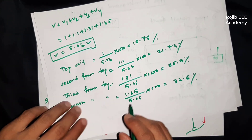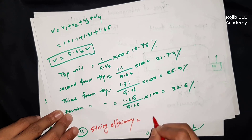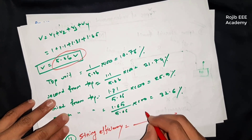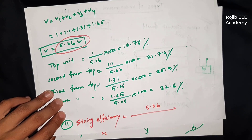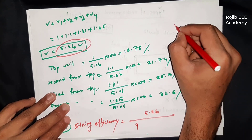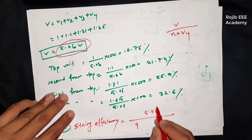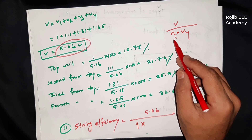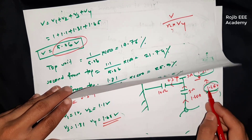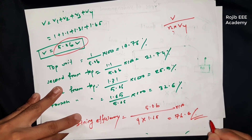Now we calculate string efficiency. The formula for string efficiency is: total voltage across the string divided by N times the voltage across the nearest conductor unit. Total voltage V equals 5.06, N equals 4 (four insulators in the string), and V4 equals 1.65. So string efficiency equals 5.06 divided by (4 into 1.65) into 100, which gives 76.6 percent.